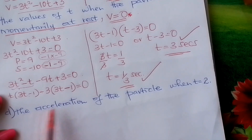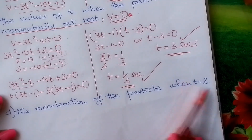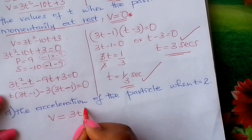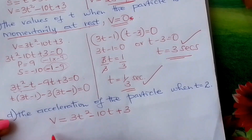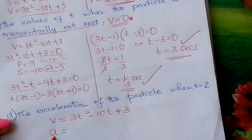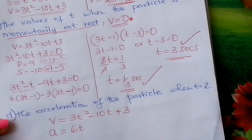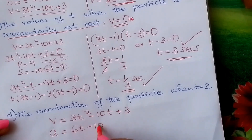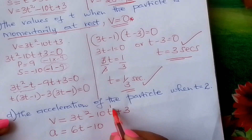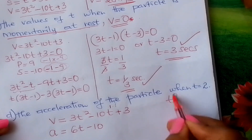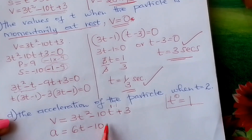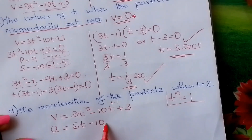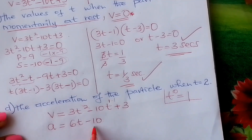Finally, find the acceleration of the particle when t equals 2. We write the expression for velocity: v equals 3t squared minus 10t plus 3. From v, we get a by differentiating — remember s, v, a. Differentiating: bring the 2 down, multiply by 3 to get 6t. Minus: the power of t is 1, bring it down, multiply to get 10; t raised to 0 is 1, so it's just 10. The expression for acceleration is a equals 6t minus 10.